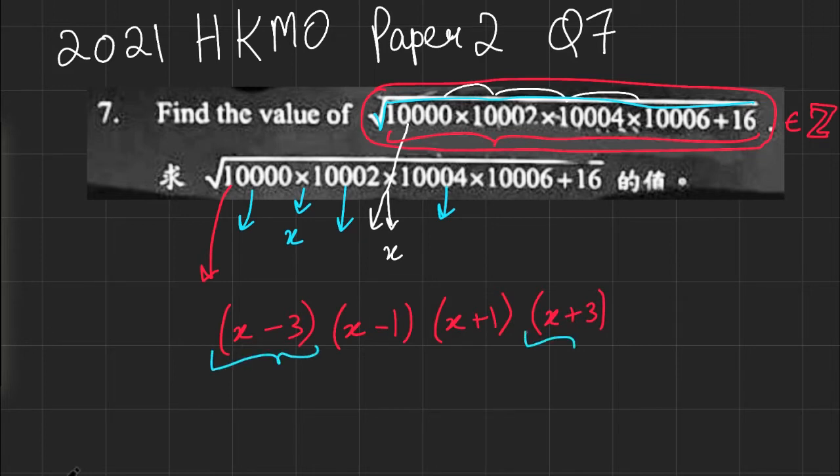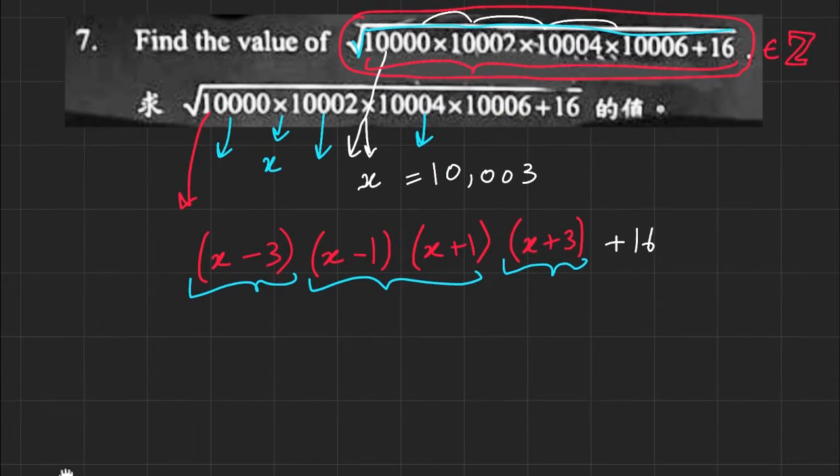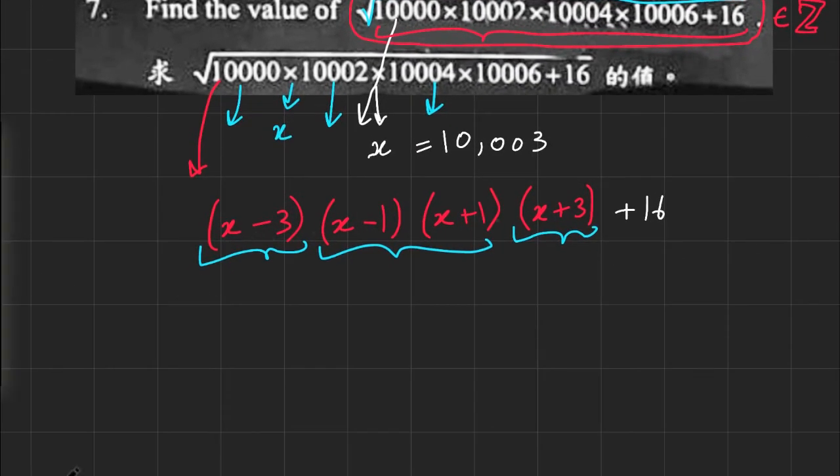Hey, that's actually exactly what we want because these two are going to multiply out nicely and then these two are going to multiply out nicely as well. So if I do have the plus 16 here and I substitute x equals 10,003, we can try to expand this and see where we get, see where we go from there.